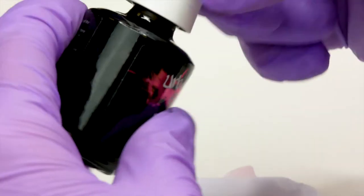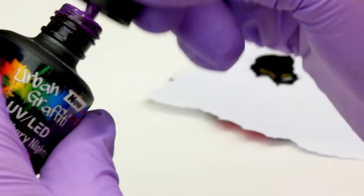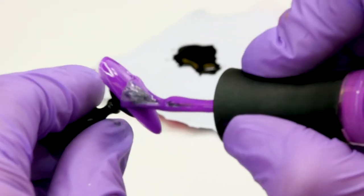On a form I'm going to put some of the Urban Graffiti Top Coat—a blob of that. We're going to go in with our final nail. We're going to use some more Glastonbury Nights. Give that another coat.